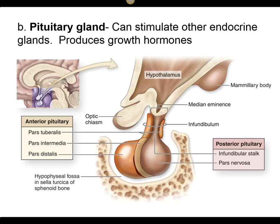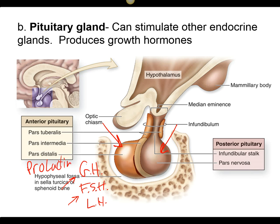The pituitary gland produces many different hormones. There are two parts: the anterior and posterior pituitary gland. It produces GH — growth hormone — follicle stimulating hormone, which has to do with ovulation cycles, and luteinizing hormone. We also produce prolactin, which helps the production of milk; oxytocin, which has to do with pregnancy, contraction of the uterus, and release of milk; and ADH, which regulates water levels in the blood and blood pressure.